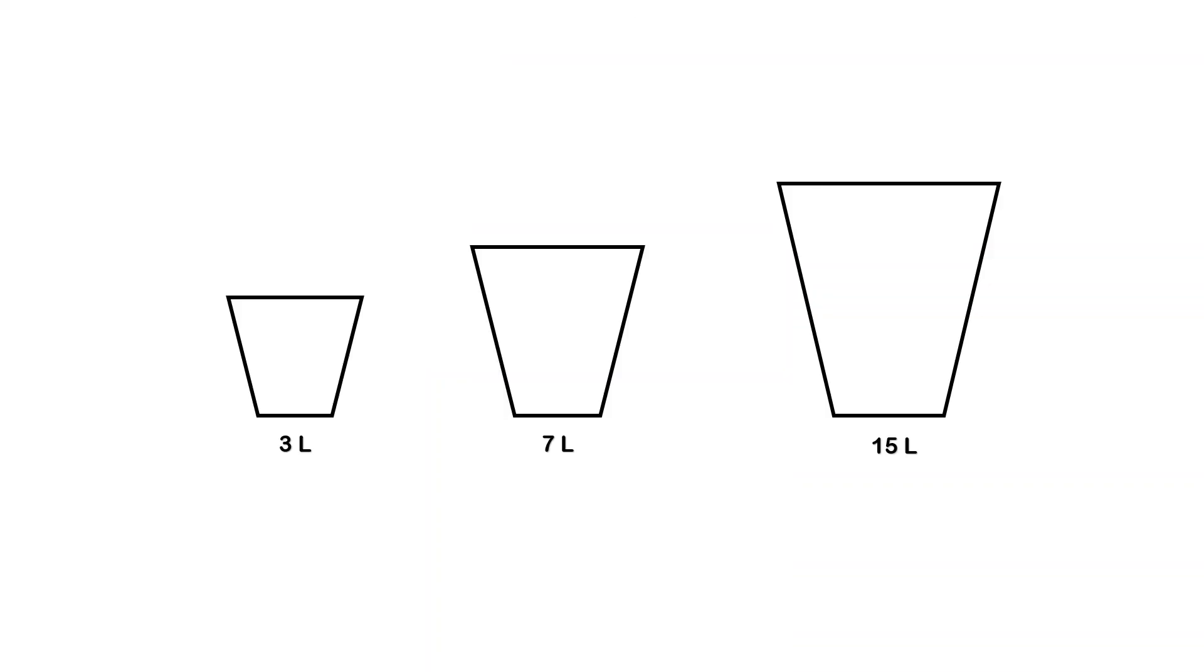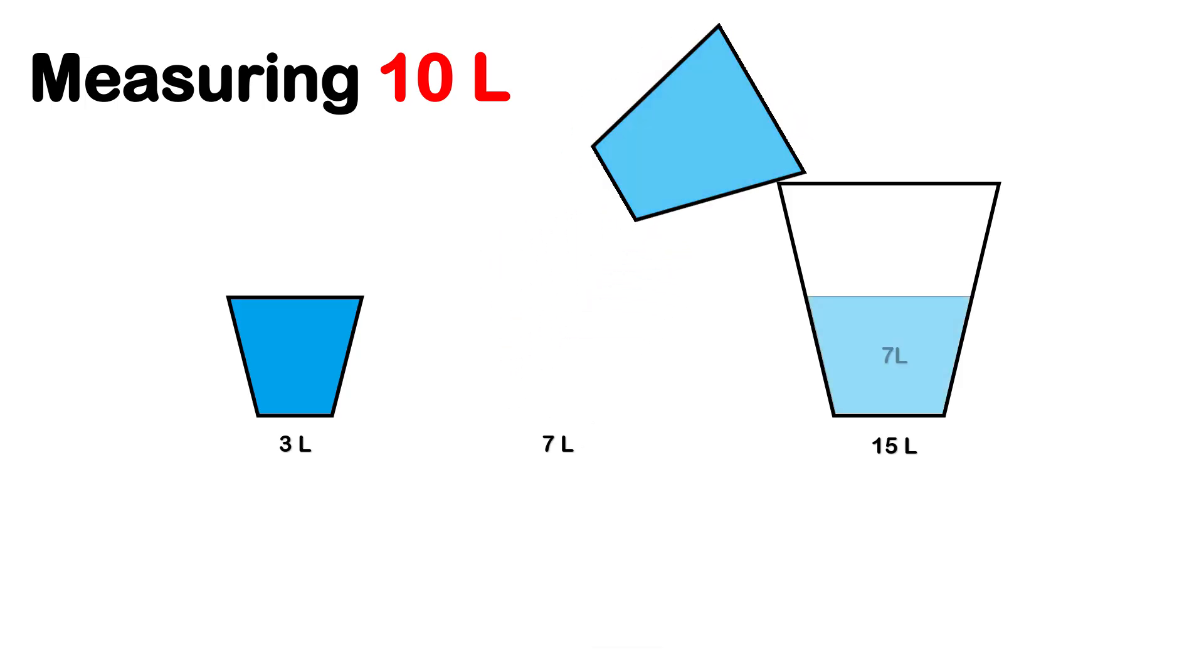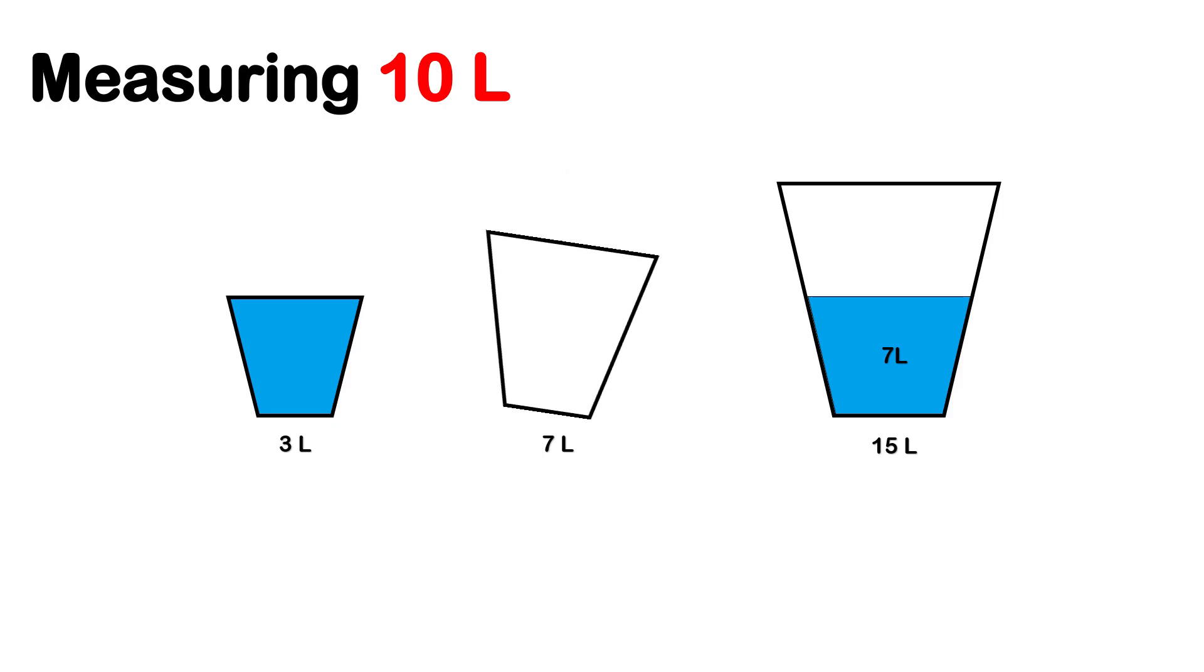All right, ready? Let's walk through the answers. Measuring 10 liters. This one's easy. Fill the 3-liter bucket and fill the 7-liter bucket. Pour both of them into the 15-liter bucket. 7 plus 3 equals exactly 10 liters. Done.